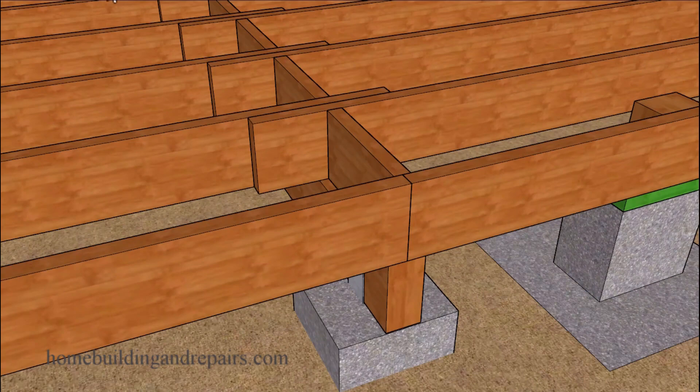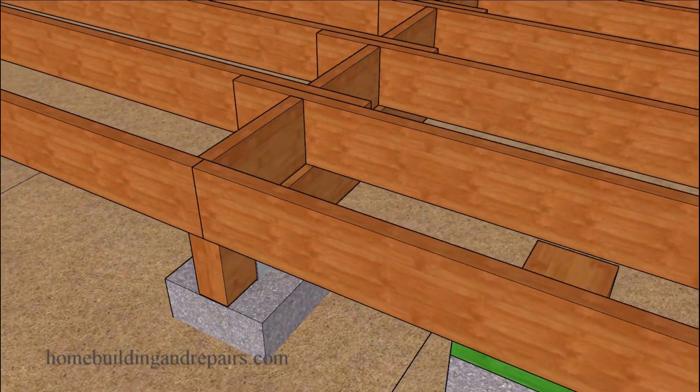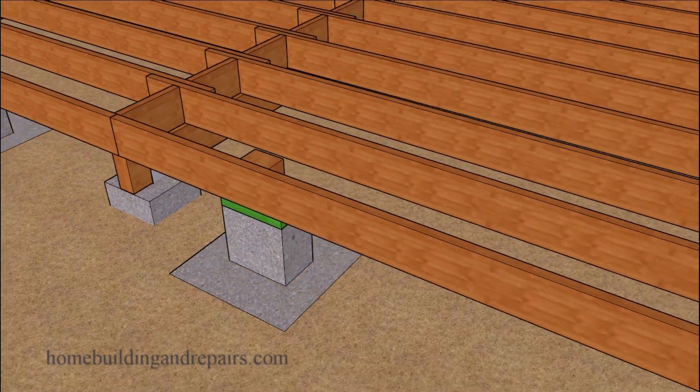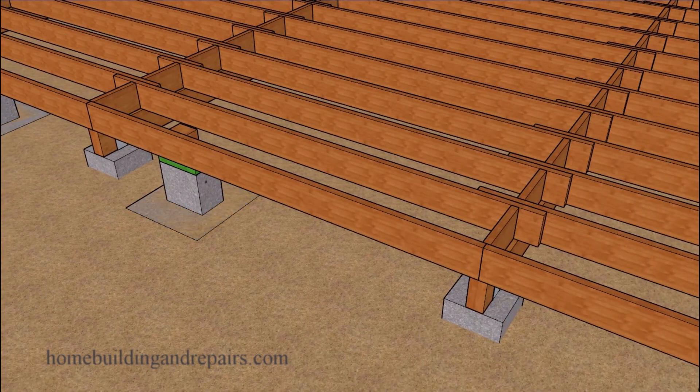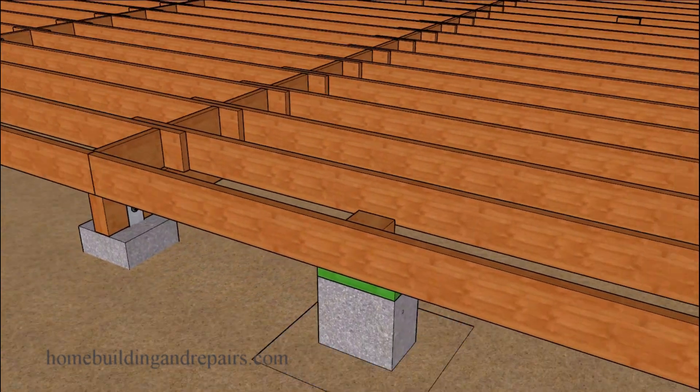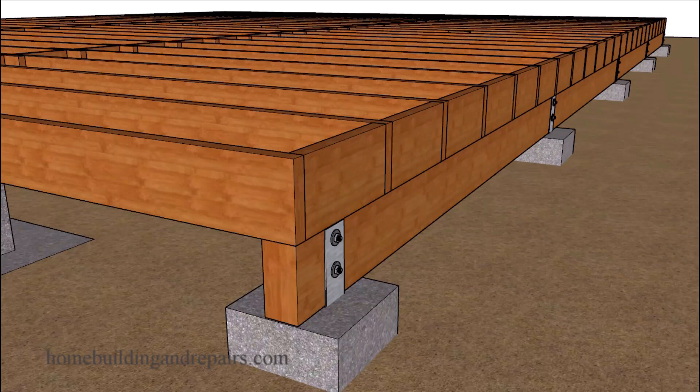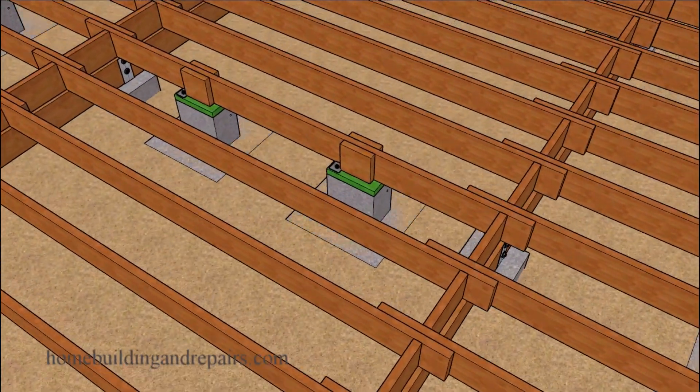And our mid span blocking for the joist. Of course the joist will be lapping over the beams. The floor joist will be 16 inches on center and pretty self-explanatory for a crawl space.